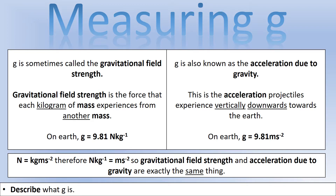G is referred to by two different things that actually mean the same thing. It's sometimes called the gravitational field strength - the force each kilogram of mass experiences on Earth - as in w = mg. It's also known as the acceleration due to gravity, indicating the acceleration an object experiences in Earth's gravitational field. Both have the value of 9.81: field strength in newtons per kilogram, gravitational acceleration in meters per second squared - which are actually equivalent units.